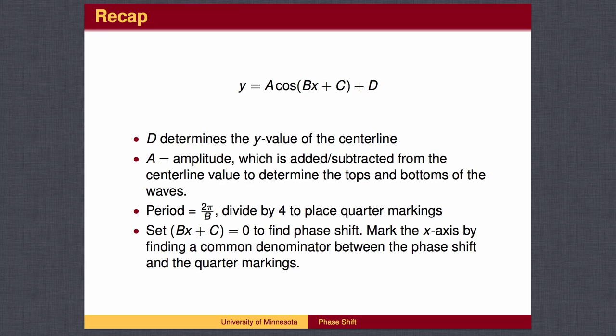To recap: d determines the center line of the wave, and the amplitude is used to find the tops and bottoms of the waves. The period is 2 pi over b, which is cut into 4 parts to determine the reference points. To find the phase shift, find the value of x that makes the angle 0.